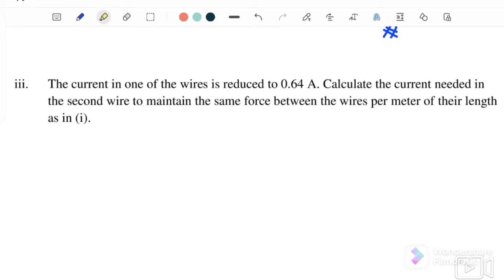Next, the current in one of the wires is reduced to 0.64 amperes. Calculate the current, meaning that we want to find i2. What is the value for i2 when i1 equals 0.64 amperes to maintain the same force? To maintain the same force means we must use back the force that we found just now between the wires per meter of their length.